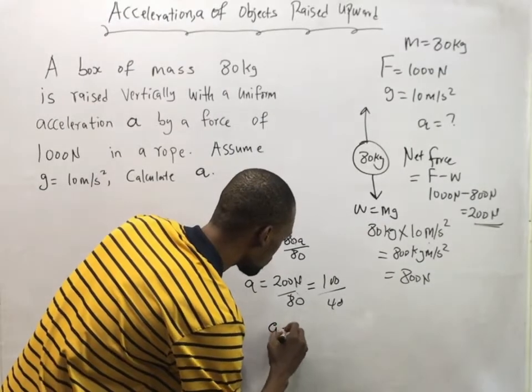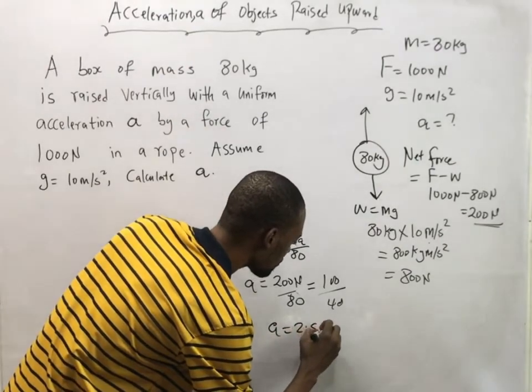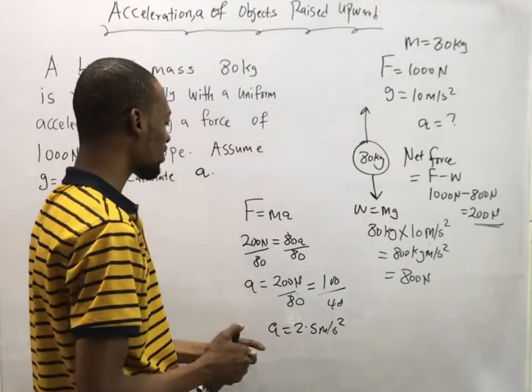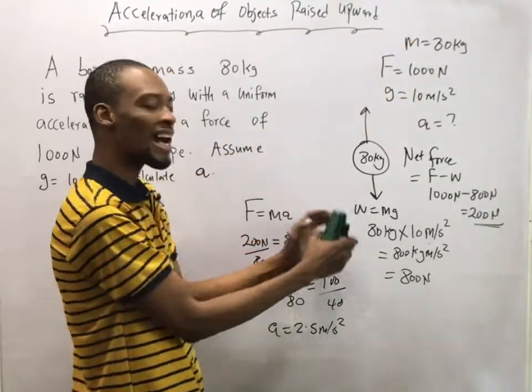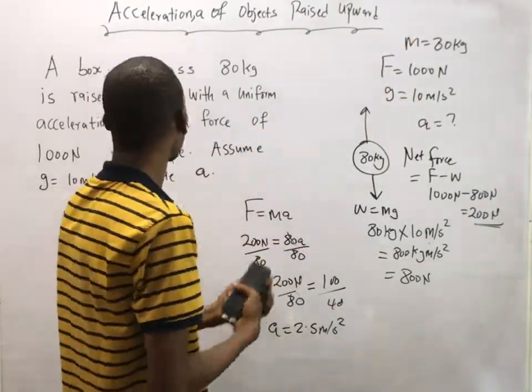This will give you 2.5 meter per second squared. So this is how to calculate a when you have g. You are given force and weight acts on the force.